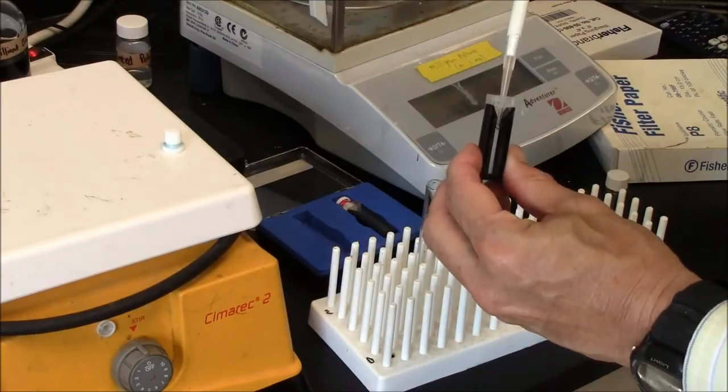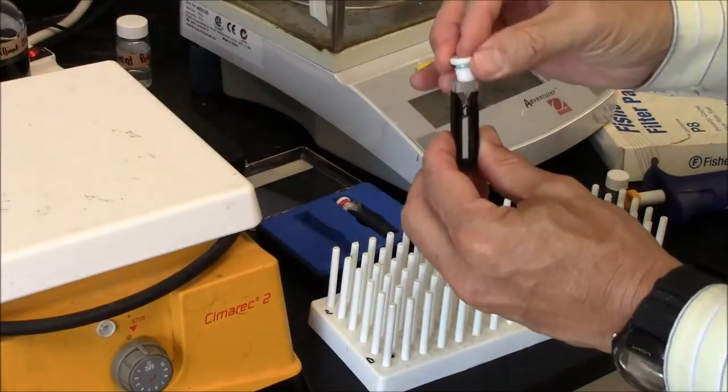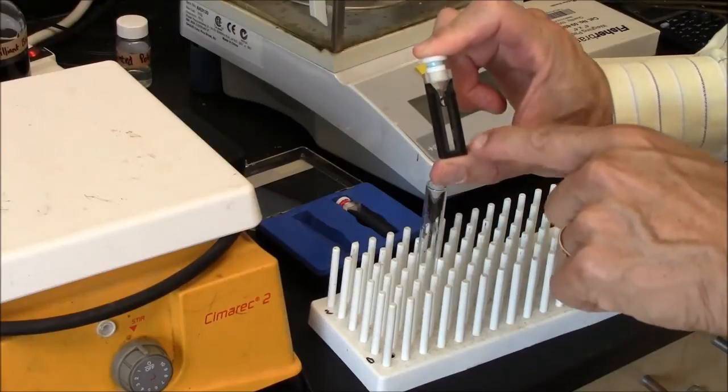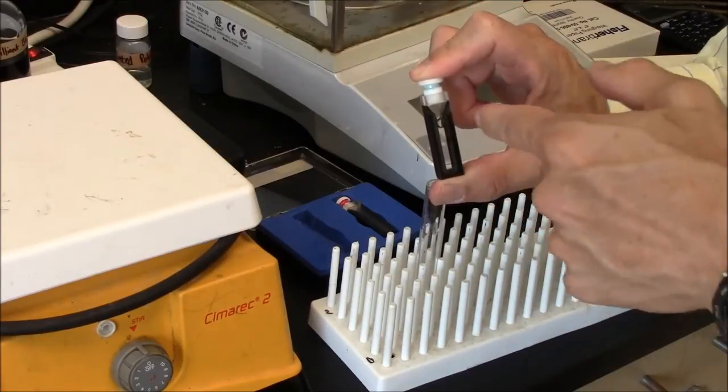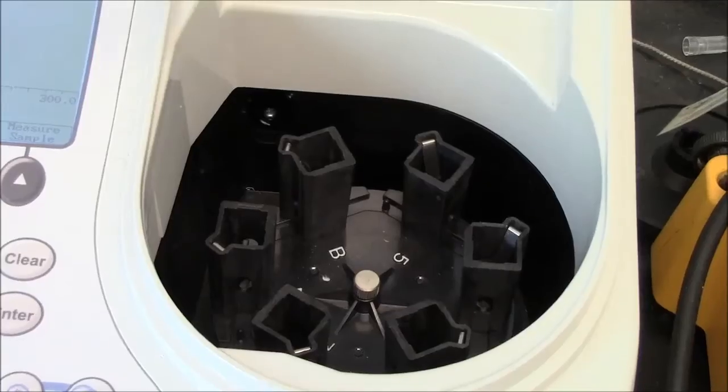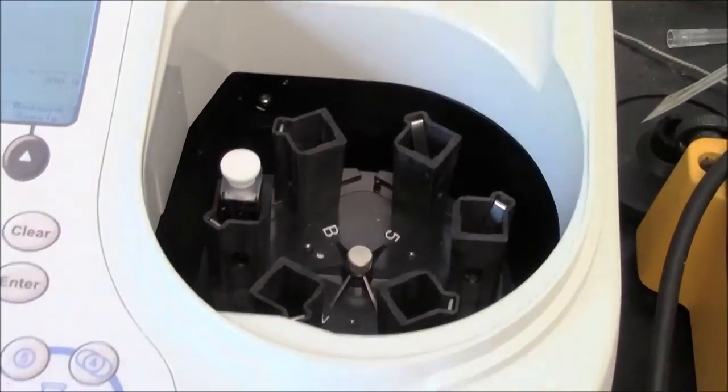I'm pipetting directly into the ethanol. I know my sample has been delivered. And now I need to mix. If I don't mix it, sometimes my molecule ends up on the bottom of the cuvette and it's not measured accurately. So I need to make a homogeneous solution. So I put the cuvette into slot number one. And I close the lid.